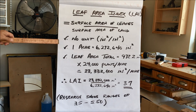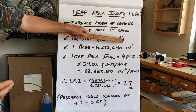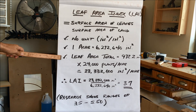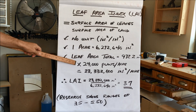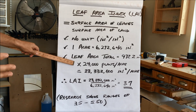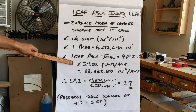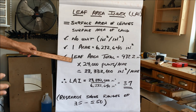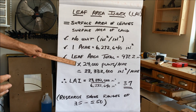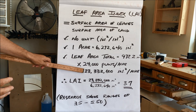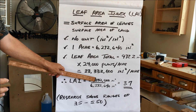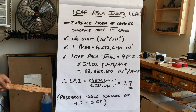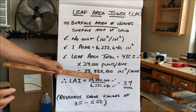Now let's do the math. One acre equals 6.27 million square inches of land. My total leaf area — adding all the leaves up — is 972.2 square inches. But I've got 24,000 plants per acre, and I'm making the assumption that all plants are equal. So 972 times 24,000 gives me 23.3 million square inches per acre of leaf surface area. That leaf area index is then 23.3 million divided by 6.27 million square inches per acre, giving me a leaf area index of 3.7.